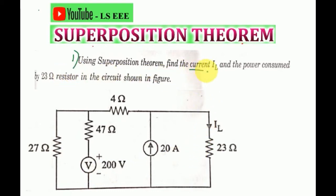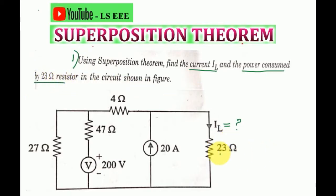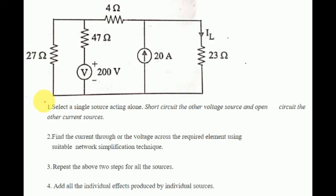We need to find the current IL value, and the power consumed by the 23 Ohm resistor. So for the 23 Ohm resistance, let's find out the power consumed. Let's apply the Superposition Theorem.